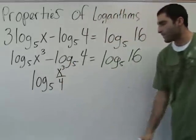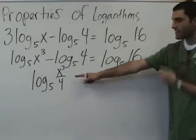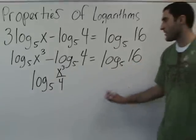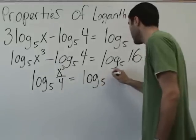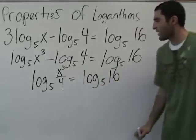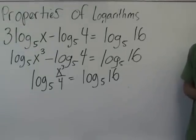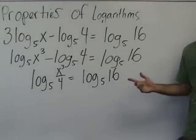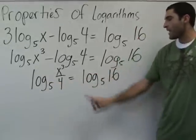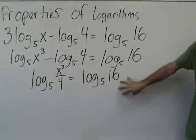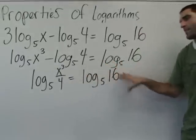So tell me what to write. Log base 5 of x to the 3 over 4. How do you do that? Look at your second property we wrote at the beginning. It looks just like that. So now look what's happening. You have log base 5 of this guy equals log base 5 of that guy. So wouldn't you agree this guy must be equal to that guy.